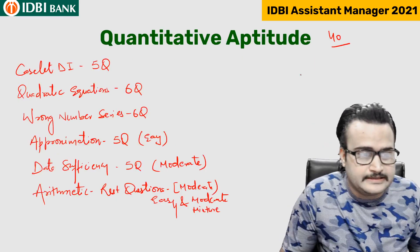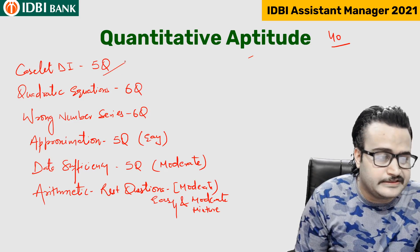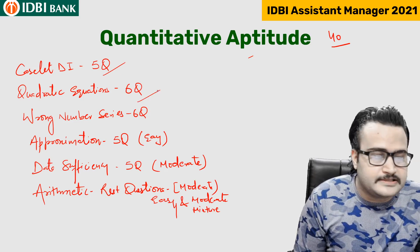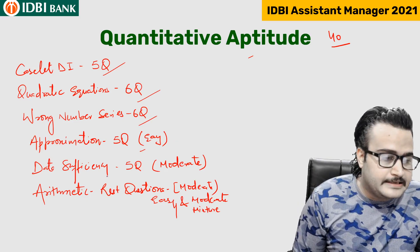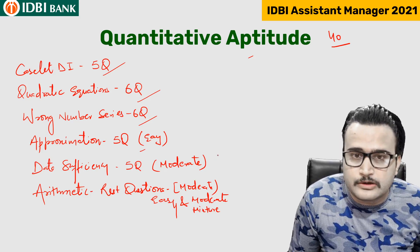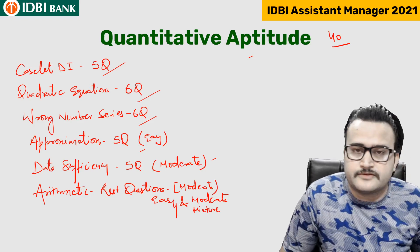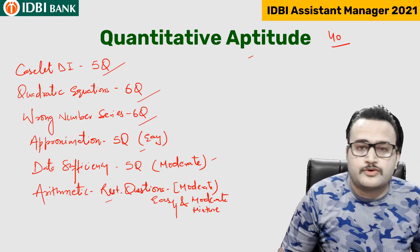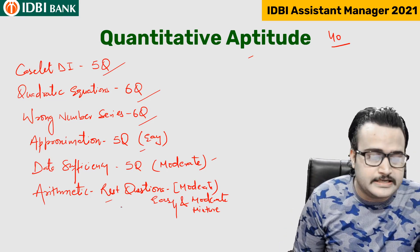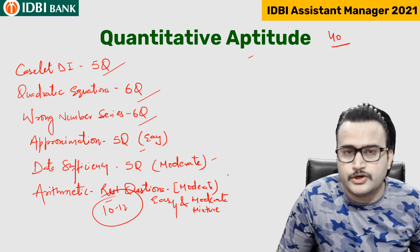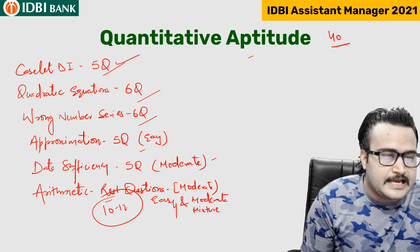Out of 40, 22 to 28 was the best attempt in English. In the Quantitative Aptitude section: case-lets — 5 questions, quadratic equations — 6 questions, wrong number series — 6 questions, approximation — easy in nature, 5 questions. Data sufficiency appeared not only in the reasoning section but also in the quant section — 5 questions. Arithmetic questions made up the rest, with a mix of easy to moderate, mostly moderate, around 10 to 12 questions.